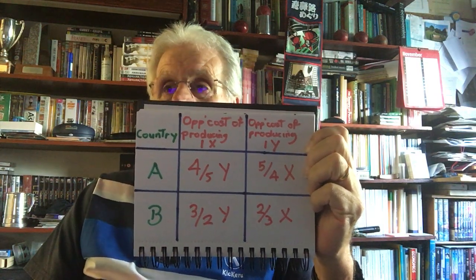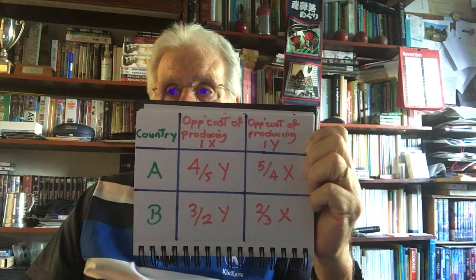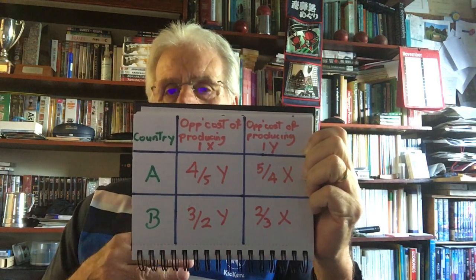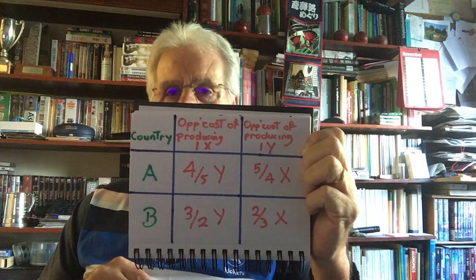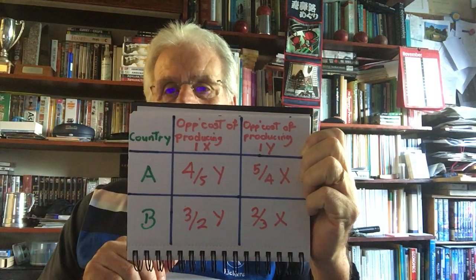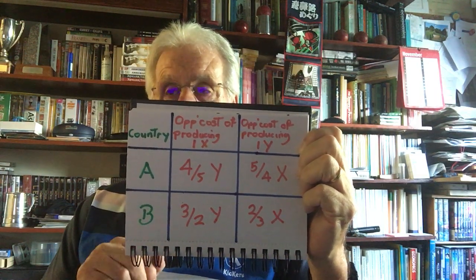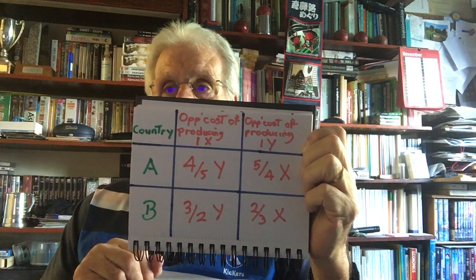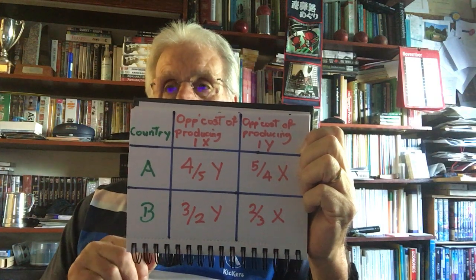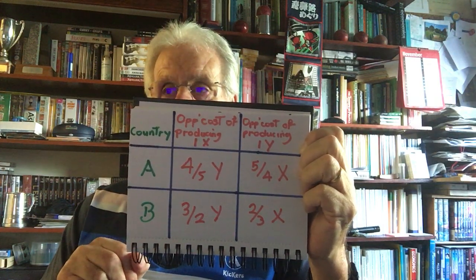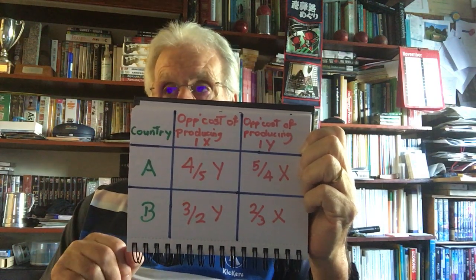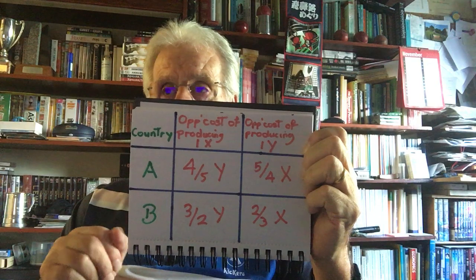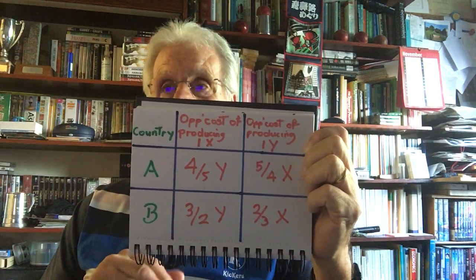Reading up and down the table, we identify who has the lower opportunity cost. Country A's opportunity cost of 1X is 4/5 Y, which is less than country B's 3/2 Y — confirming A's absolute advantage in X. Country B has a lower opportunity cost for Y: 2/3 X versus A's 5/4 X. These opportunity costs confirm exactly where absolute advantage lies.